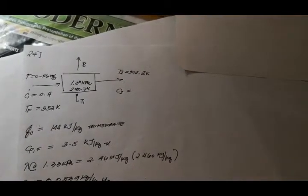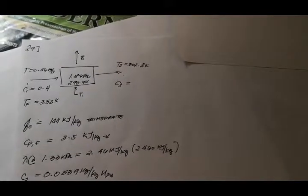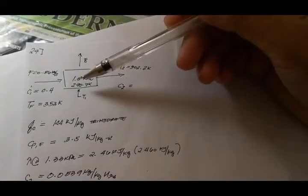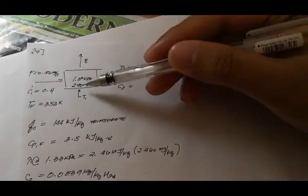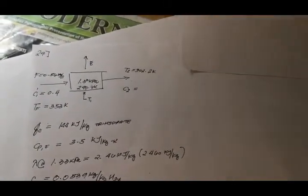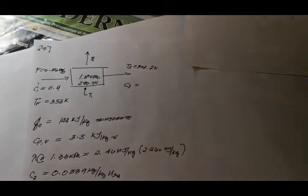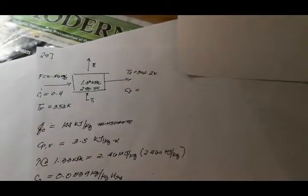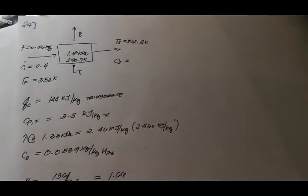But it is stated in the problem that the solution has a boiling point elevation of 11.5 degrees Kelvin, which means that the exit liquor temperature is the boiling point of water at 1.33 kPa plus the BPR of 11.5 Kelvin, which corresponds to the temperature of 302.2 Kelvin.